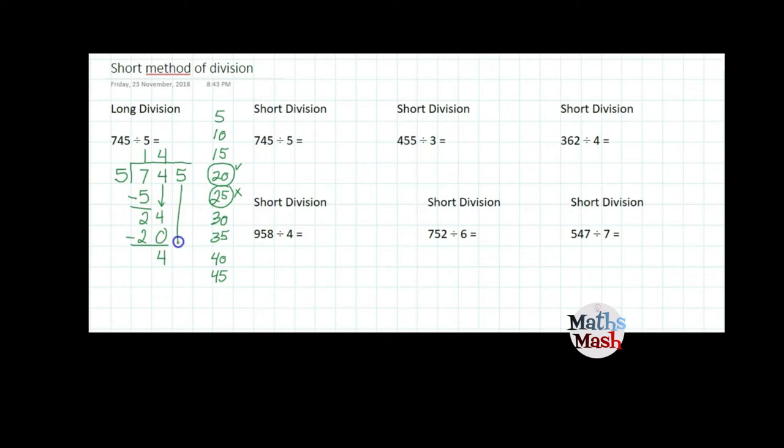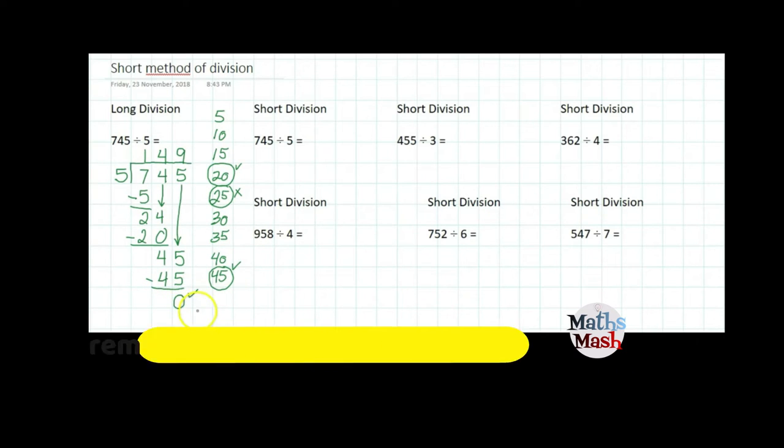I bring down my 5 that gives me 45 and again I look down my list of multiples and I see that 45 is at the bottom. So I write 45 because that's what I'm going to subtract. What did I do to 5 to get 45? I multiplied it by 9. Make sure all your digits are in nice straight lines like I've done here and I subtract 45 from 45 that gives me 0.